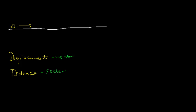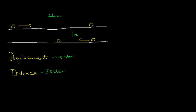Let's say I have this ball and it moves to another position, here. After arriving at this place, suppose the ball turns back and comes to here. Let's say the first distance it moved is 4 meters. When it turns back, suppose it moves by 1 meter. Now let's think about what is the displacement and the distance in each case.